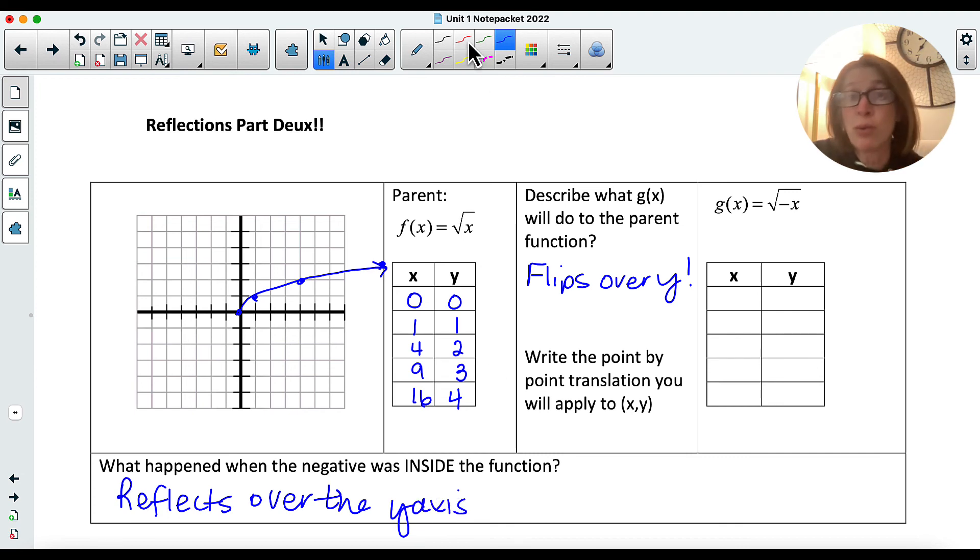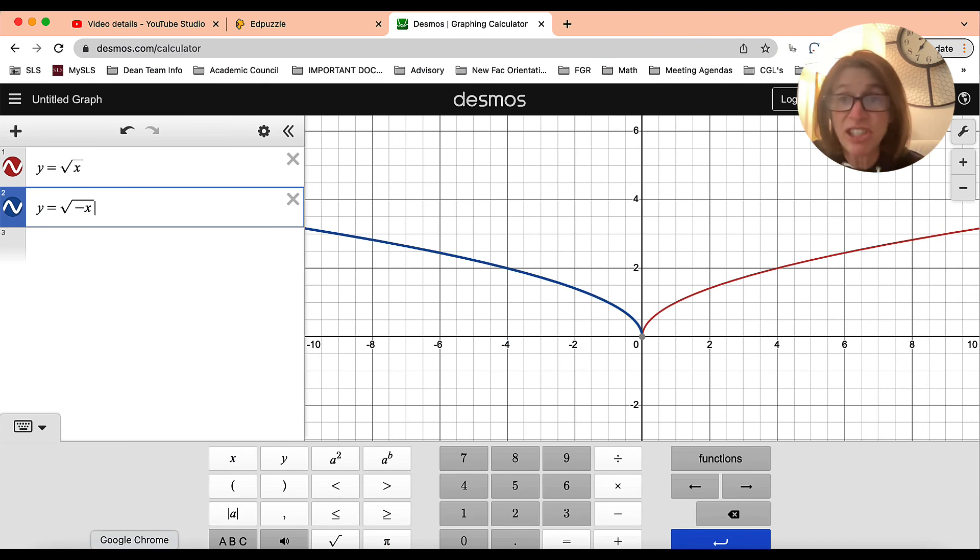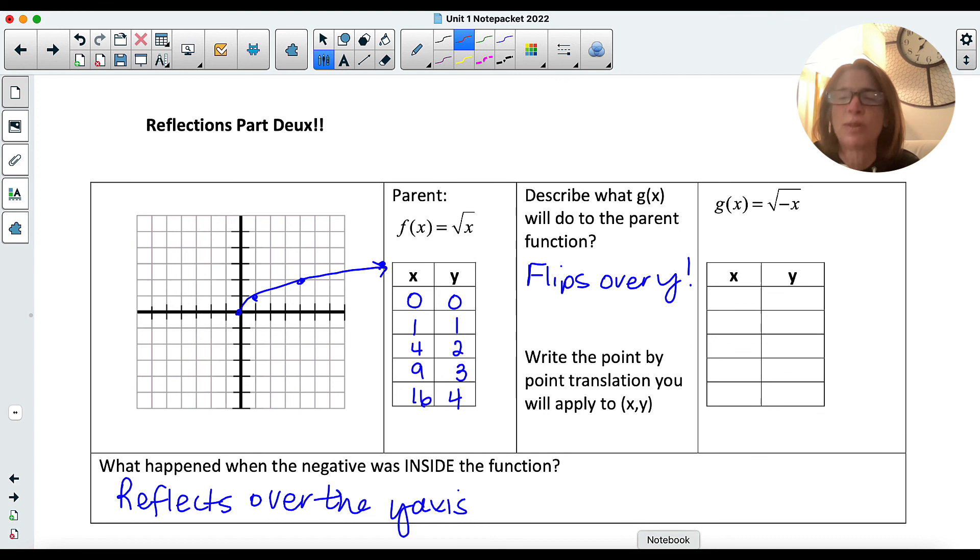But remember, we really want to focus on what changed. So let's go back and look again. What changed in this graph? Hmm, not the y's, the x's. Because again, it's on the inside of the function, and the function is what's doing stuff to my inputs. So I want you to really think about the logic behind that. So in this case, all of my x's are going to become negative. So my rule would be x, y to negative x, y. And so I'd have 0, negative 1, negative 4, negative 9, and 0, 1, 2, 3. So 0, 0, negative 1, 1, negative 4, 2, and then 9, 3 right up here. And so you can see that's a nice reflection.